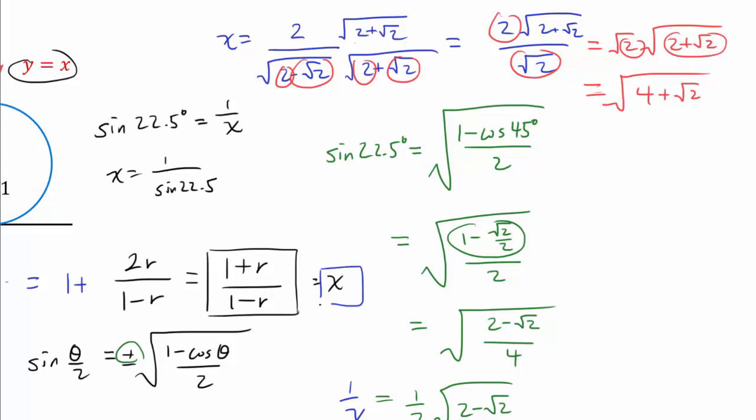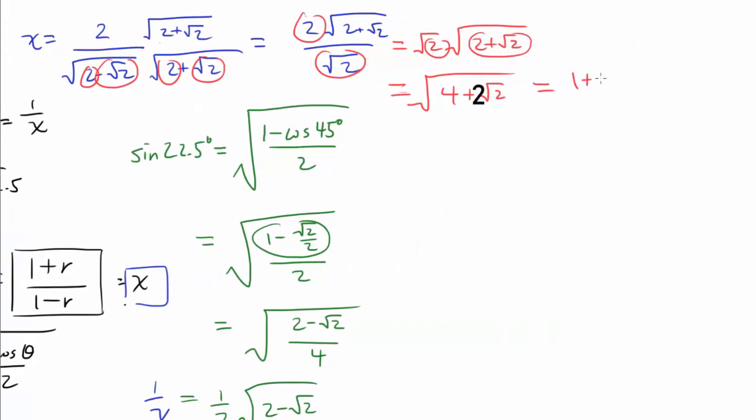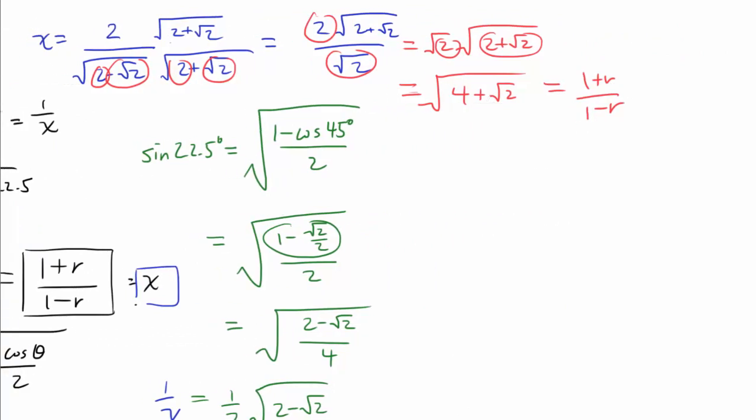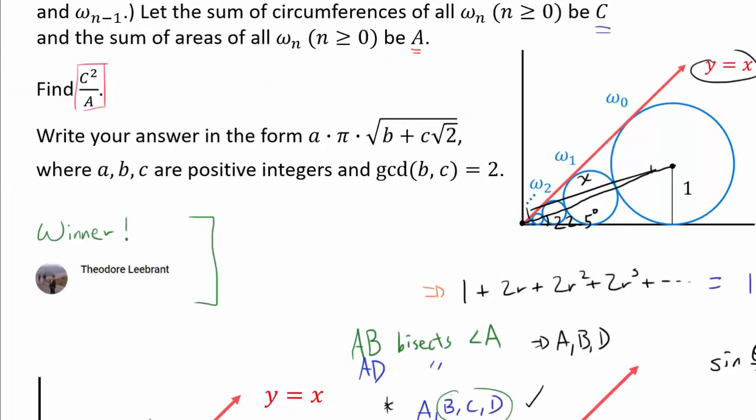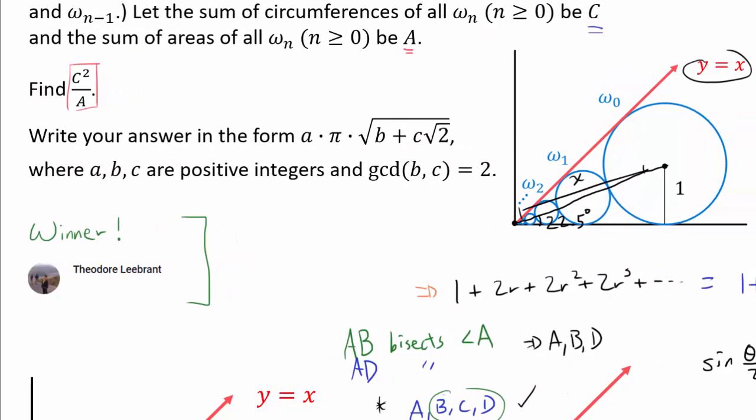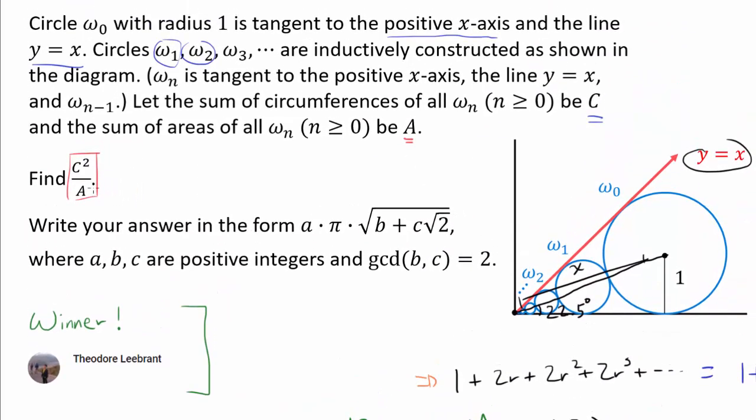So we know this thing is (1 + R) over (1 minus R). Now we can go ahead and find R. But let's quickly go back and see what we want to find in the end. We wish to find C² over A.